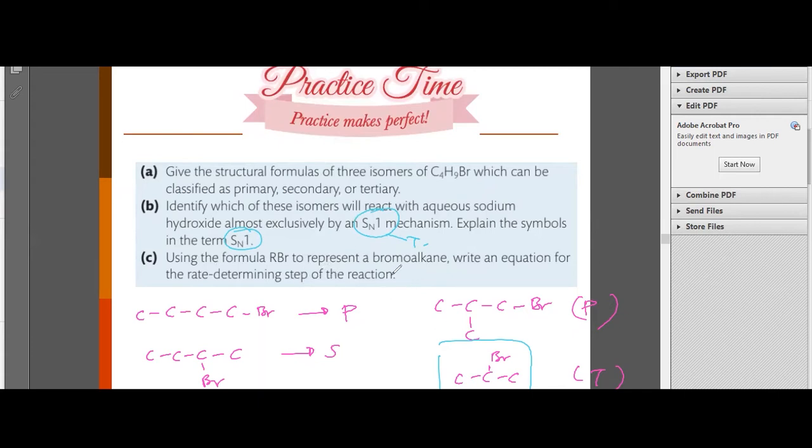Using the formula RBr to represent bromobutane, write an equation for the rate-determining step for the reaction. So RBr, SN1, slow to form R+ with Br-. This is how to insert the equation.